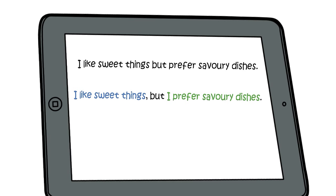That's why the conjunction has a comma before it. But if you look at the top one, prefer savory dishes is not a standalone sentence. That is a simple sentence, not a compound sentence.